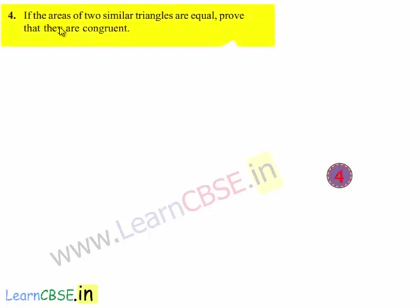Now moving on to the fourth question: if the areas of two similar triangles are equal, prove that they are congruent.